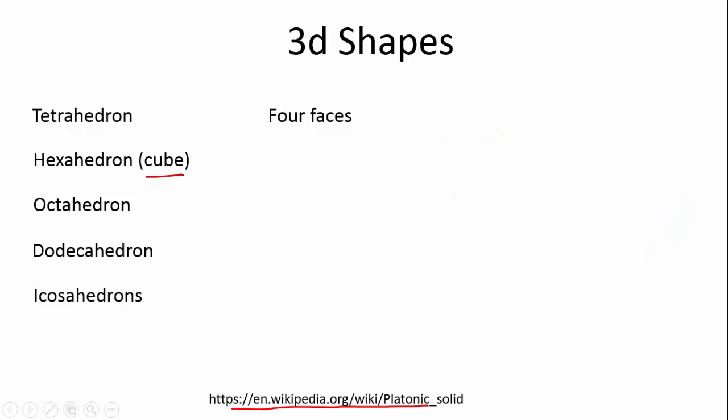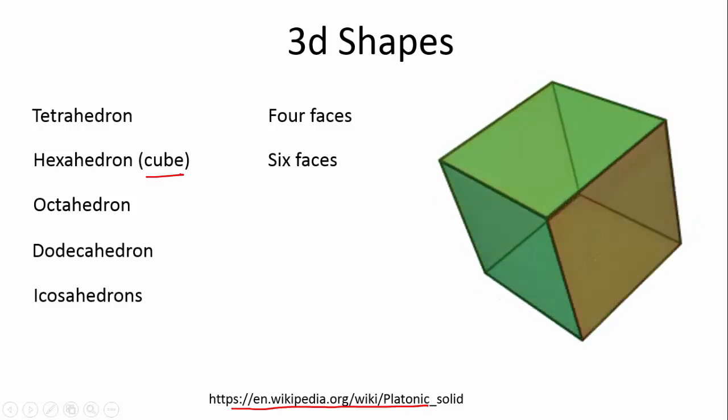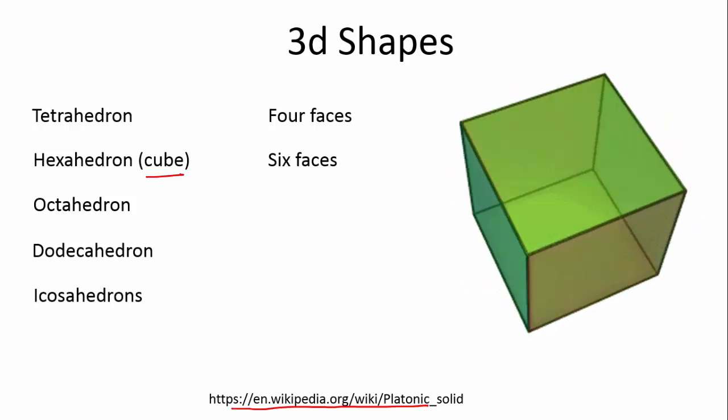What about a hexahedron, also known as a cube? That is 6 faces. This is like your dice. This is probably the easiest one to visualize.